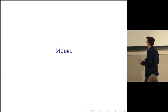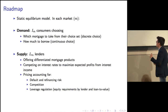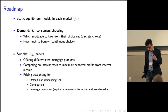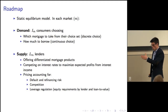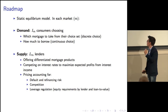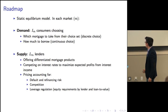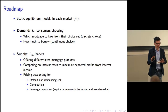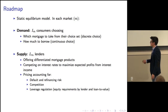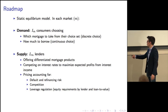With these stylized facts in mind, let me describe the model. It's a static equilibrium model where in each market, on the demand side consumers make two choices: which product to take — a discrete choice — and how much to borrow — a continuous choice. On the supply side, lenders offer differentiated products; Lloyds and Bank of America are not the same. They compete on interest rates to maximize expected profit, pricing to account for the main risks, competition, and leverage regulation.